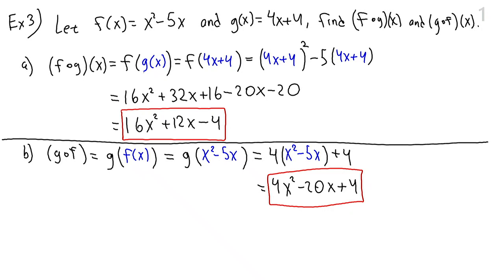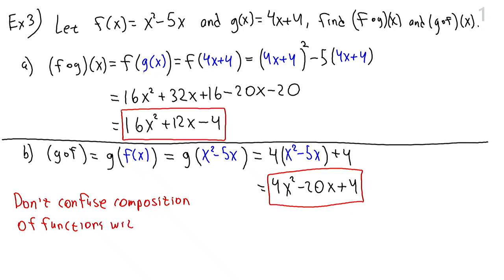The most common mistake is to confuse composition with multiplication. f times g and f composed with g are two completely different things. If we wanted f times g here, we would simply multiply x squared minus 5x by 4x plus 4 — but that's not what we're doing. We are composing the two functions, and the order in which we compose makes a difference.